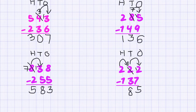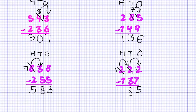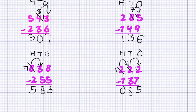Our hundreds friend no longer has 200 — he has only 100 because he gave 100 to our tens friend. So what is 1 minus 1? That is 0. So we have our answer as 85.